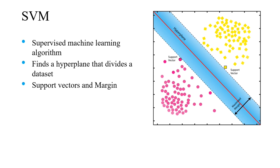SVM, or support vector machine, is a supervised learning algorithm that can classify linearly non-separable data by constructing a hyperplane or combination of hyperplanes in a high-dimensional space. SVMs are based on the idea of finding a hyperplane that best divides the data into two classes, while maximizing the margin between the two support vectors. Support vectors are the points in the dataset that are nearest to the hyperplane.